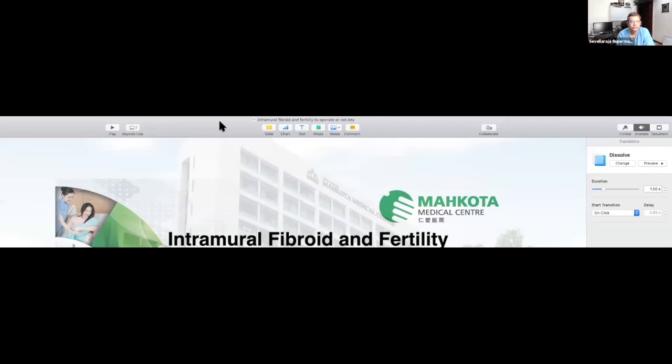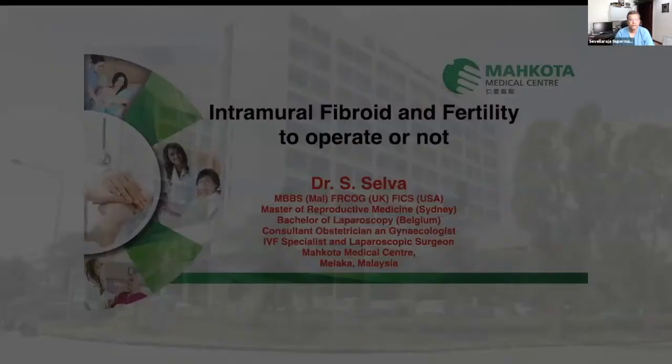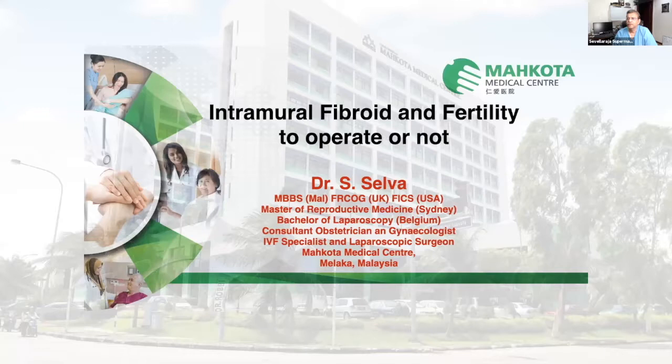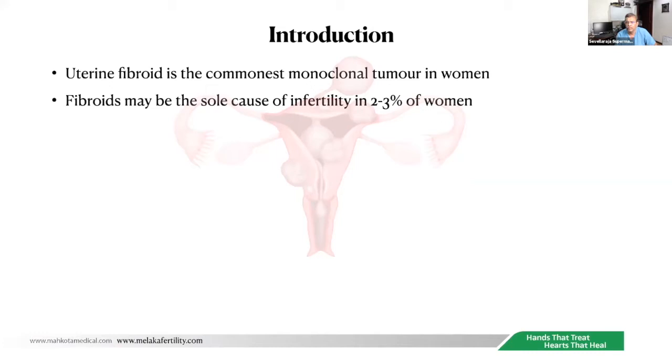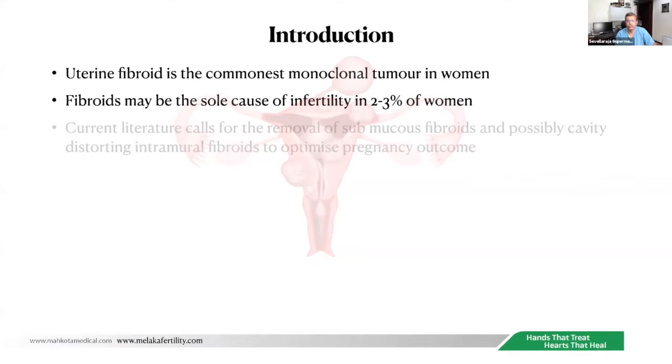Okay, I'm going to share my screen now. Thank you, Dr. Rayleigh, for your kind introduction. Today my topic will be intramural fibroid and infertility — to operate or not. We all know that uterine fibroid is the commonest monoclonal tumor in women. Fibroids may be the sole cause of infertility in about 2% to 3% of women.